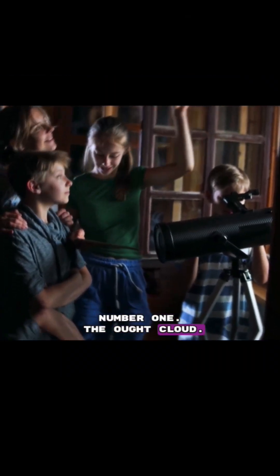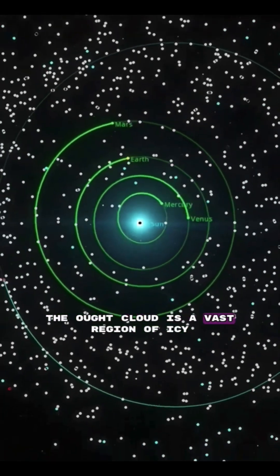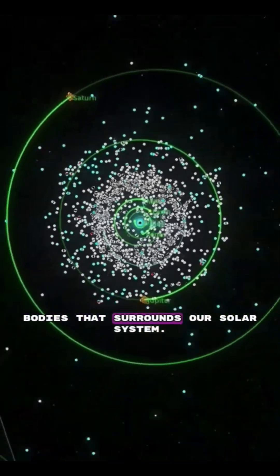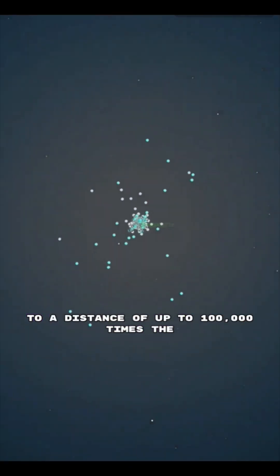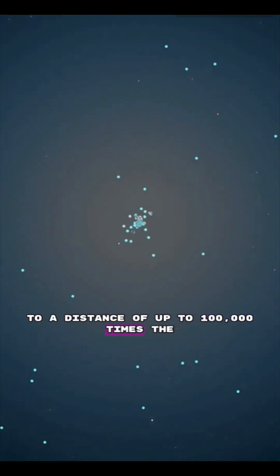Number one: the Oort Cloud. The Oort Cloud is a vast region of icy bodies that surrounds our solar system. It's so far away that it's thought to extend to a distance of up to 100,000 times the distance from Earth to the Sun.